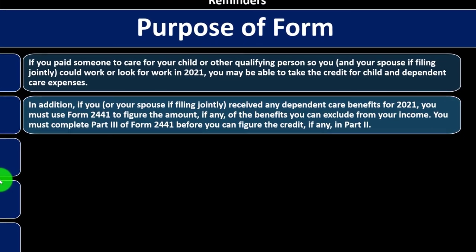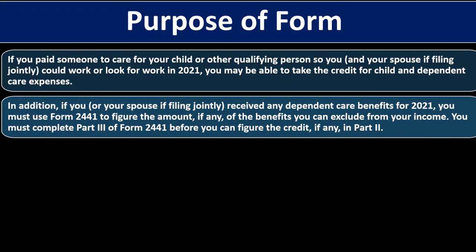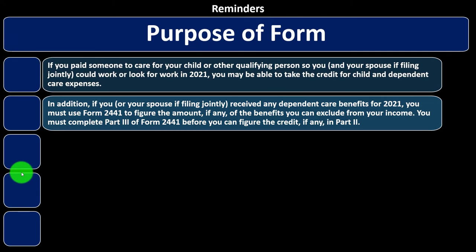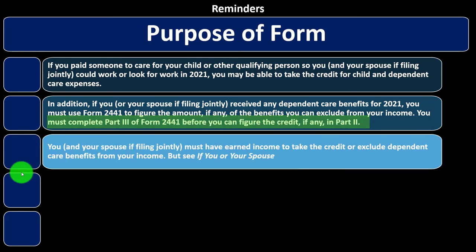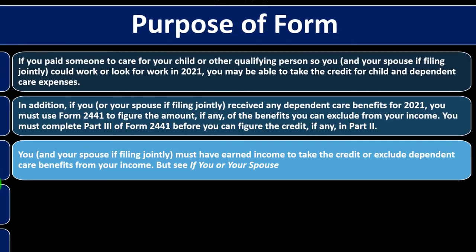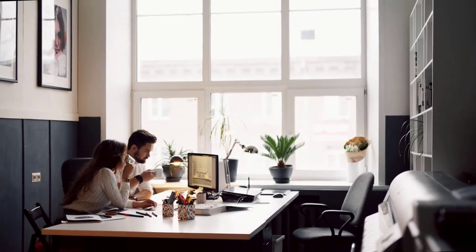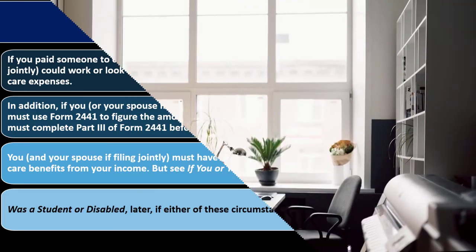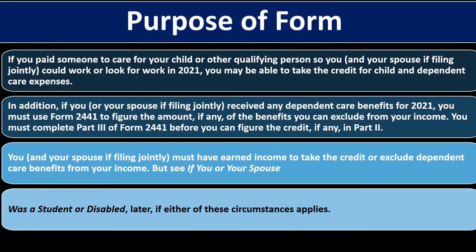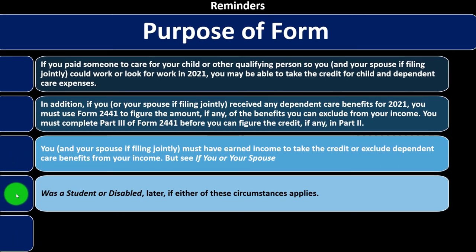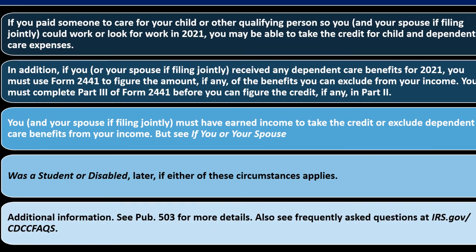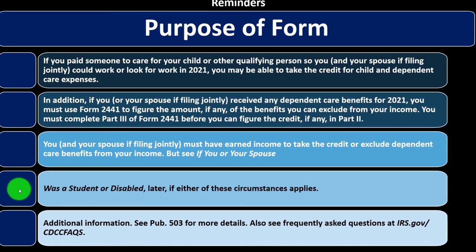If you or your spouse filing jointly received any dependent care benefits for 2021, you must use Form 2441 to figure the amount of benefits you can exclude from your income. You must complete Part 3 of Form 2441 before figuring the credit in Part 2. You and your spouse filing jointly must both have earned income — typically W-2 income or Schedule C income — to take the credit or exclude dependent care benefits. For additional information, see Publication 503 and frequently asked questions at irs.gov/cdccfaqs.